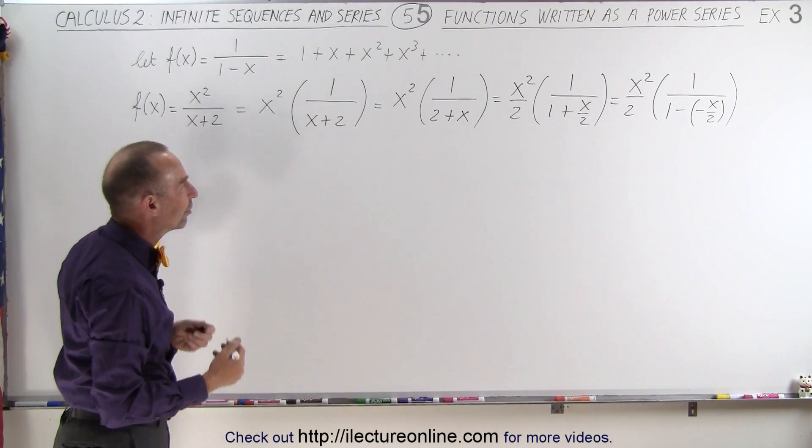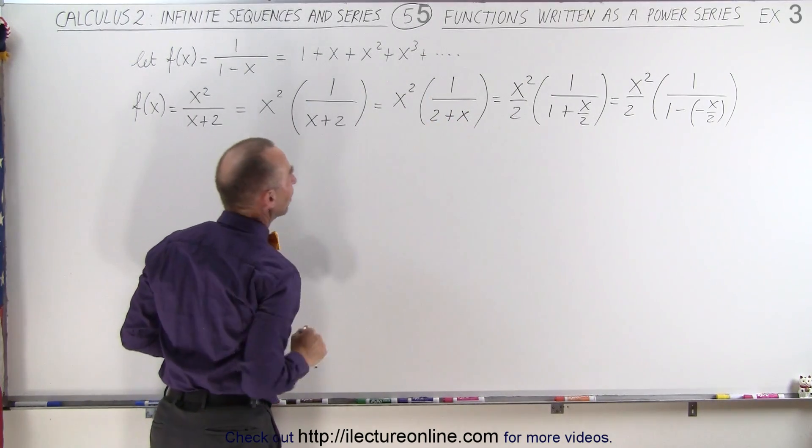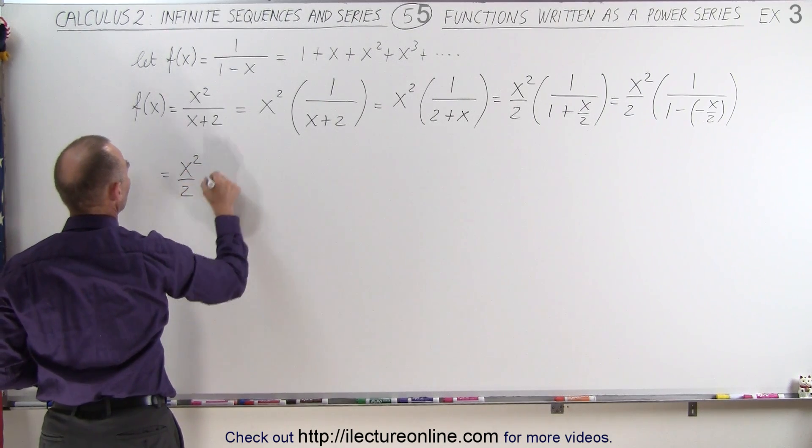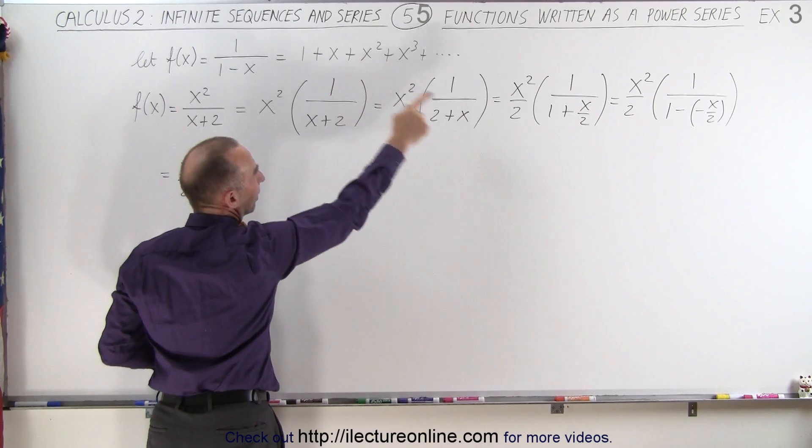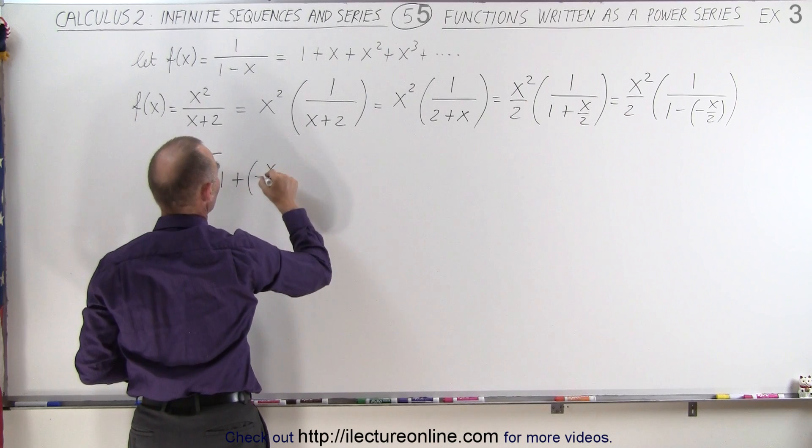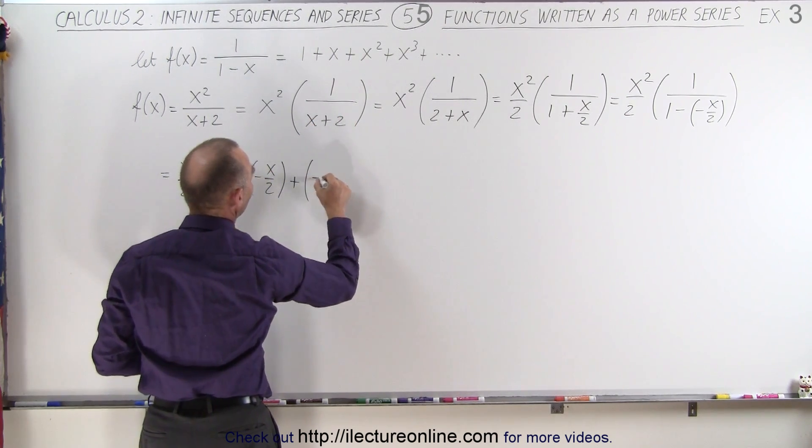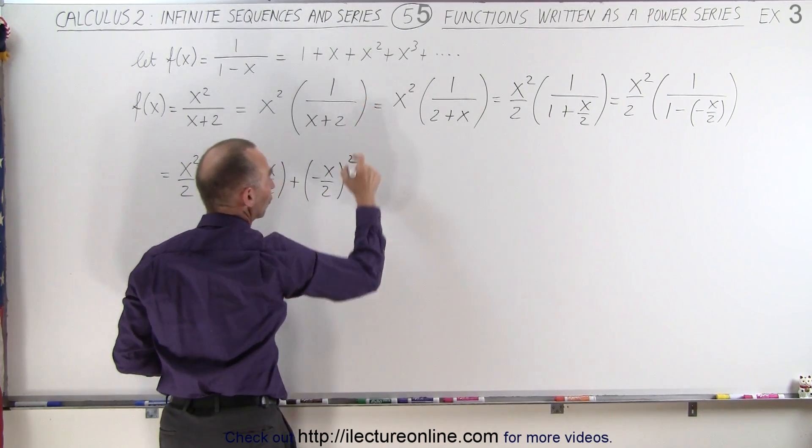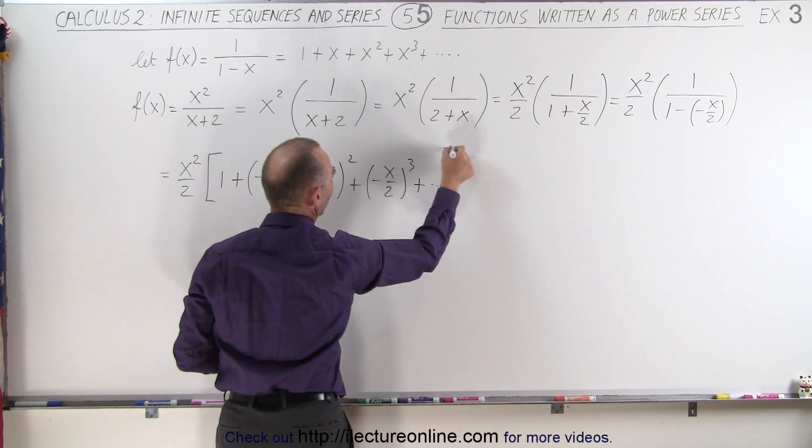So now we can write it as an infinite sum, replacing every x here by a minus x over 2. This can be written as x squared divided by 2 times 1 plus instead of x a minus x over 2. So minus x over 2, and that would be plus, that would be a minus x over 2 squared, plus instead of an x cubed would be a minus x over 2 cubed, plus and so forth.